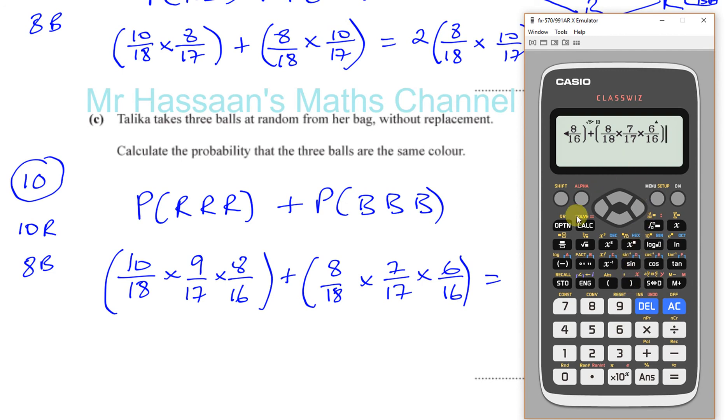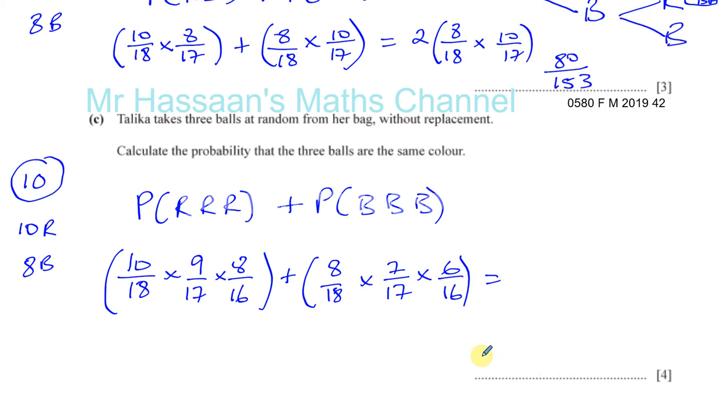It's always good to check in case you made a silly mistake. So if we go back and check everything carefully: 10 over 18 times 9 over 17 times 8 over 16, plus 8 over 18 times 7 over 17 times 6 over 16. Equals 11 over 51. So answer is 11 over 51.